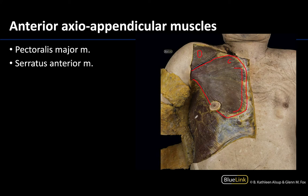The serratus anterior — you can only see a little bit of it here, but it has a very distinct saw-tooth appearance and extends a little bit more inferiorly as well. Its more proximal attachments are on the ribs, and its distal attachments are on the anterior portion of the scapula. This muscle does not extend to the humerus; it directly attaches to the scapula, affecting the scapulothoracic joint. It is inferior and lateral to the pectoralis major.